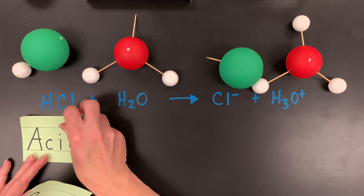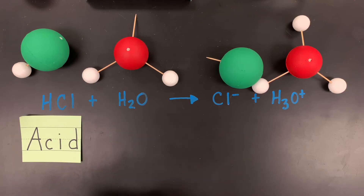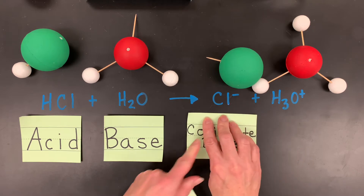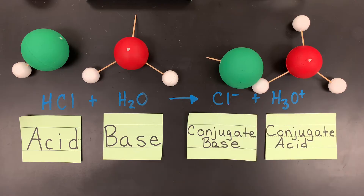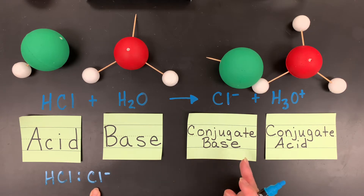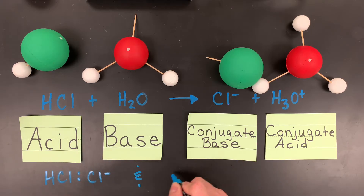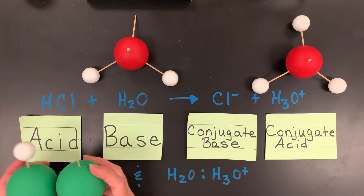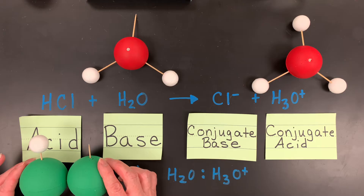So this is hydrochloric acid — it is a strong acid, which means it'll dissociate completely at 100%. Water will act as the base. On the other side, the acid's partner is a conjugate base, and the base has a partner called a conjugate acid. So HCl has a conjugate base pair — the chloride ion — and H2O is paired with the hydronium ion. They're different by one proton.